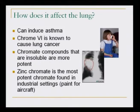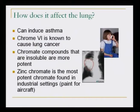Effects on the lung — chromium-6 can induce asthma and is known to cause lung cancer, as proven by several medical studies. Chromate compounds that are insoluble are more potent. Zinc chromate is the most potent chromate found in industrial settings, particularly in paints used for aircraft. When inhaled, chromates reach the lung and set in there, causing cancerous activity and acting as a carcinogen.